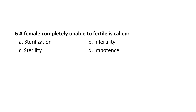A female completely unable to be fertile is called sterility, in which there is a defect in sperm or ovum. Sterilization is the complete removal of microorganisms including their spores from a surface. Infertility is the inability to be fertile due to reasons other than a defect in sperm or ovum. Impotence is the inability to erect the penis.